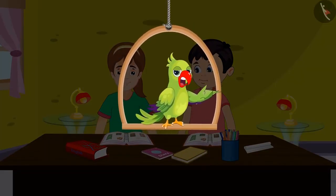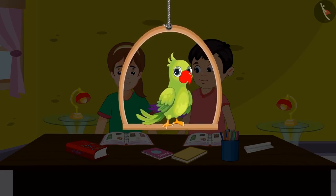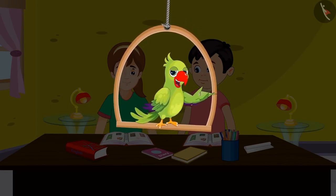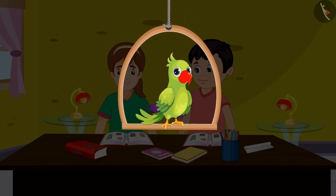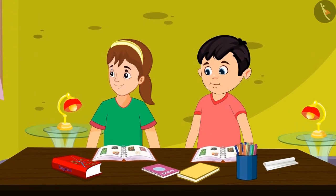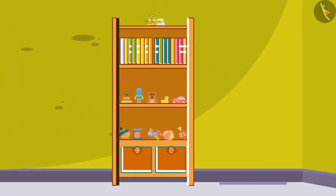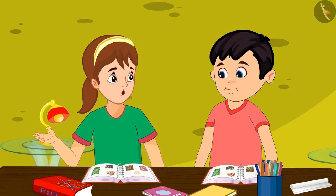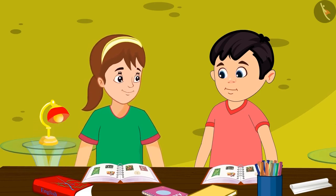Chotu and Aarni are studying together at Chotu's home. They have studied about ones and tens yesterday at school. Just then, Aarni happens to look at the toys kept in Chotu's cupboard. Oh wow, you have so many colorful toys! How many toys would these be, Chotu?